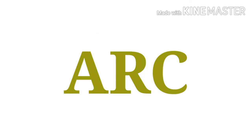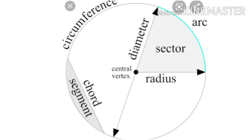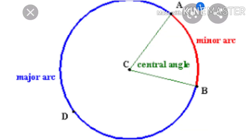Next is arc. Any part of the circumference of a circle is called an arc of the circle. If the length of an arc is less than the length of a semicircle, it is a minor arc.